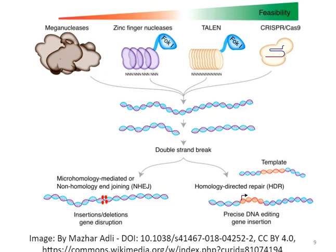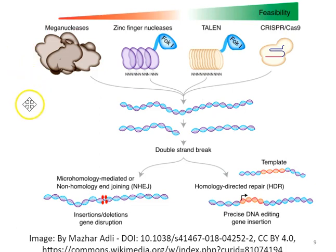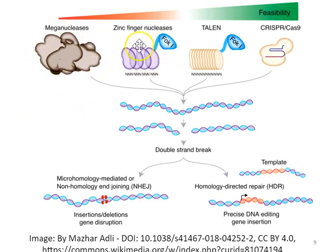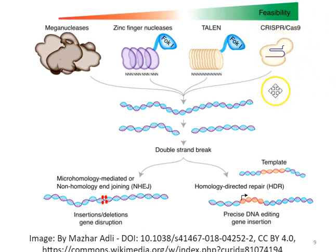The four genome editing technologies are meganucleases, zinc finger nucleases, TALENs, and CRISPR/Cas9. These are four major classes of genome engineering systems, differing primarily in the nucleases used. Each nuclease, when used for genome editing, has been engineered — they may have started as naturally occurring systems, but they've been engineered by people since then. Most recently, most efforts have focused on the CRISPR-Cas9 system as the most feasible way to very precisely change a genome.